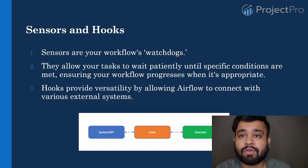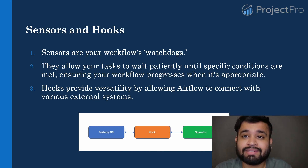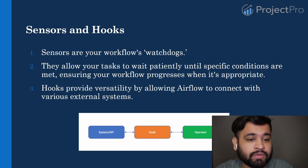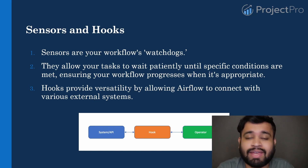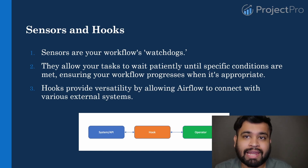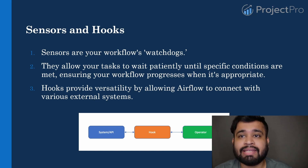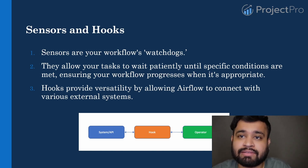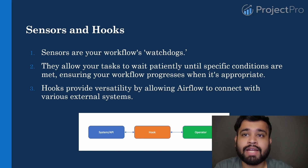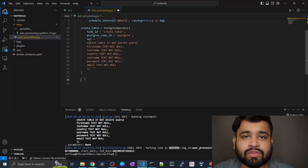Before moving on, let's understand what sensors are. Sensors are like the watchdogs of your workflow — they allow a task to wait patiently until specific conditions are met, ensuring your workflow only progresses when appropriate. For our use case, we'll use a sensor to check if the API is available before triggering the next task.